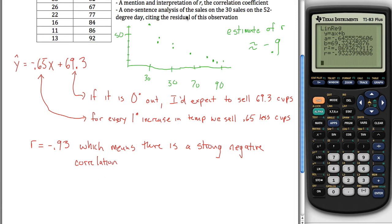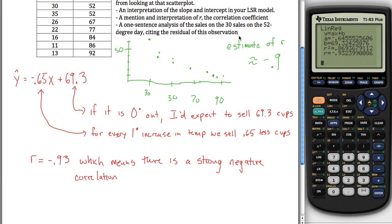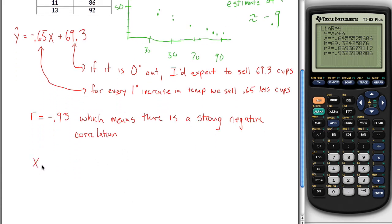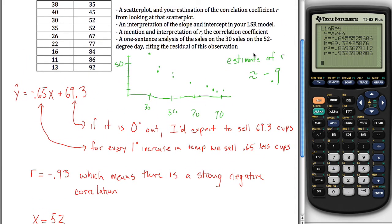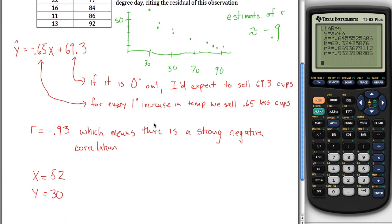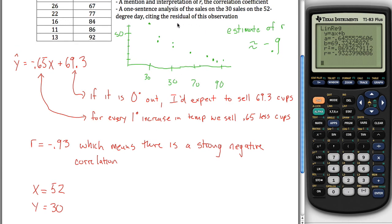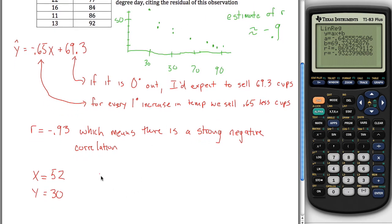A one-sentence analysis of the sales on the... Wow, that makes no sense. I'm going to have to rewrite this. A one-sentence analysis of that one day where we sold 30 cups of coffee when it was 52 degrees out. So what I'm saying is our x variable, which is the temperature, was 52, and our y variable was 30. I think that's what I'm saying. Yeah, that's what I'm saying. I'm saying this day right here, do an analysis of that. Figure out how close that was to what you expected, specifically cite the residual. So the way we can figure out the residual is, maybe I should write that first, the residual